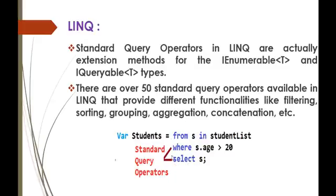What we are doing here: 'from s' — where s is a query variable — 'in studentList', which is a collection. We are telling that from s in the student list, 'where s.Age < 20', then 'select' those people. In order to do this, we are using some operators, and those operators are called Standard Query Operators.